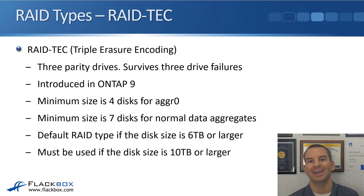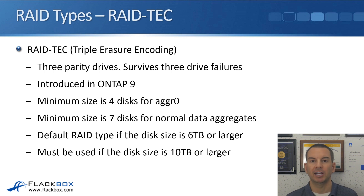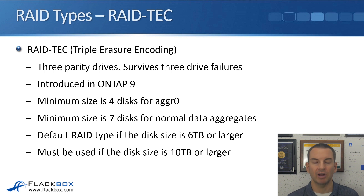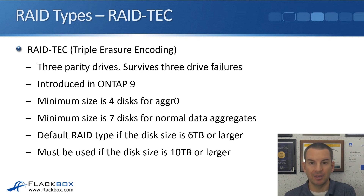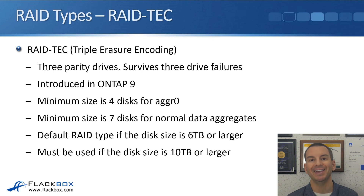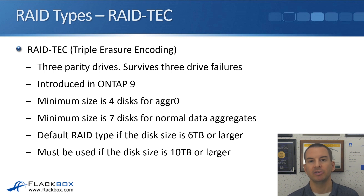RAID TEC is the default RAID type if the disk size is six terabytes or larger, and it must be used if the disk size is 10 terabytes or larger. With larger drives, if you have a drive failure, it takes longer to recalculate from parity and get a spare drive into the RAID group. Because it takes longer to repair, it's more likely that another drive will fail during that time. So with larger drives, we want more redundancy, which is why we use RAID TEC.